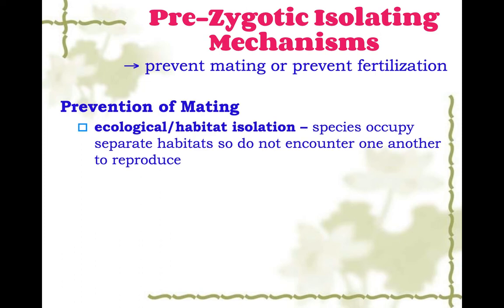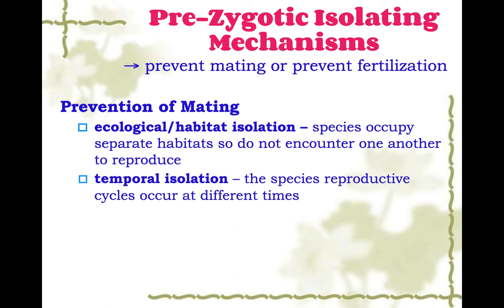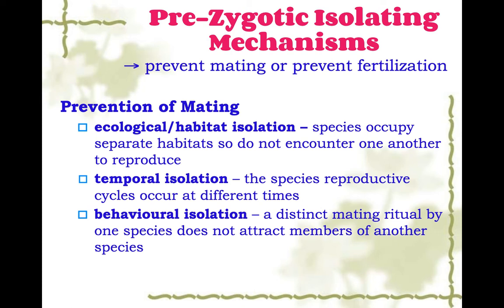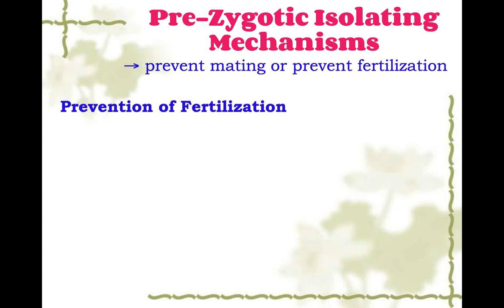Pre-zygotic isolating mechanisms either prevent mating or prevent fertilization. The first is ecological, or habitat isolation: the species are in different habitats, they don't encounter each other, so they can't reproduce — fish in the water, bird in the sky. Next is temporal isolation: the species' reproductive cycles occur at different times, so one organism breeds in the spring and the other in the fall. Then there's behavioral isolation: one species has a distinct mating ritual that doesn't attract members of another species, so they don't get together.